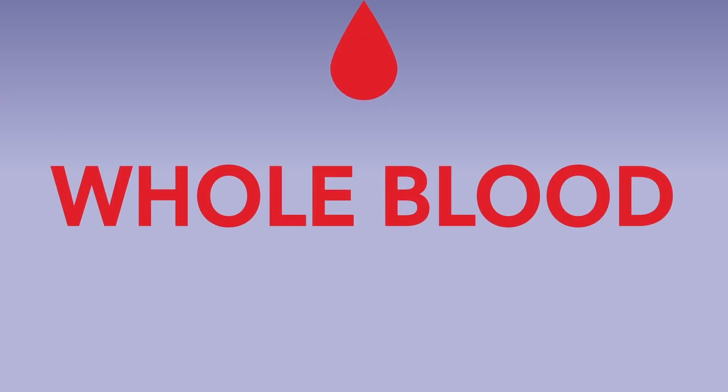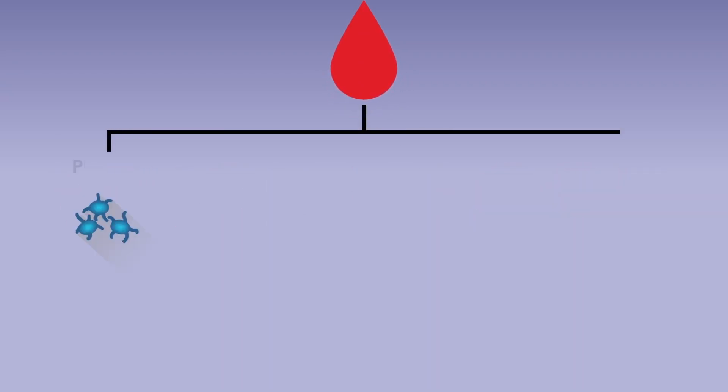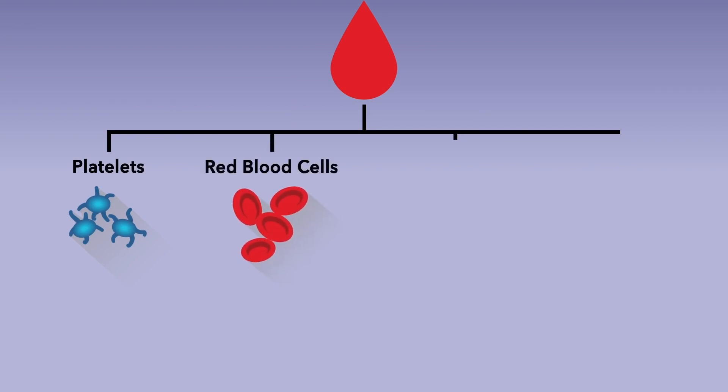The blood in your body is called whole blood, and it has four major components: platelets, red blood cells, white blood cells, and plasma.